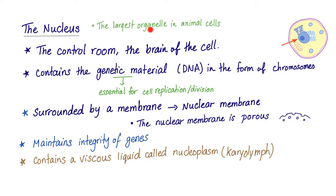The nucleus is the largest organelle in animal cells. It's the control room or the brain of the cell. It contains the genetic material in the form of deoxyribonucleic acid or DNA organized in the form of chromosomes.